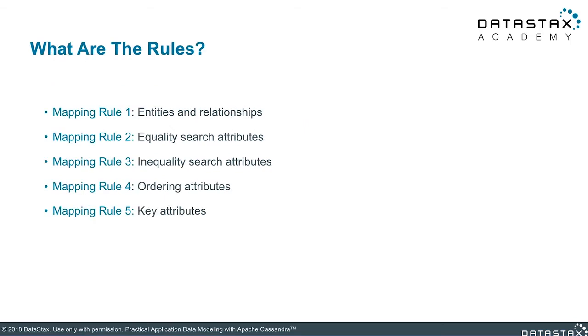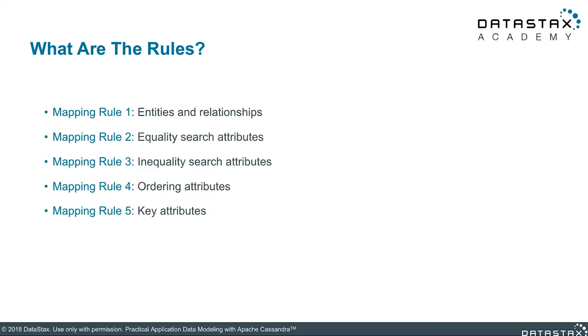Here are the five mapping rules — go ahead and tattoo these on top of each one of your fingers. They're simple and straightforward; they'll get you to the logical data tables. We first start with entities and relationships. We then look at equality search attributes, then inequality search attributes, then ordering attributes, and finally key attributes.